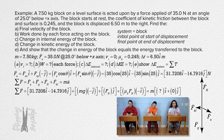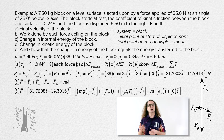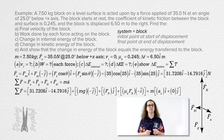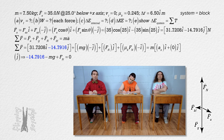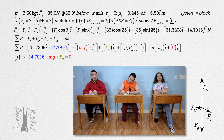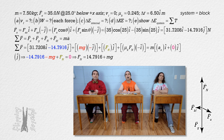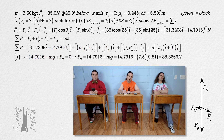The acceleration in the y-direction is zero, so from the j-direction we get: negative 14.7916 minus mass times g plus force normal equals zero. Solving for force normal gives 14.7916 plus 7.5 times 9.81, which equals 88.3666 Newtons.